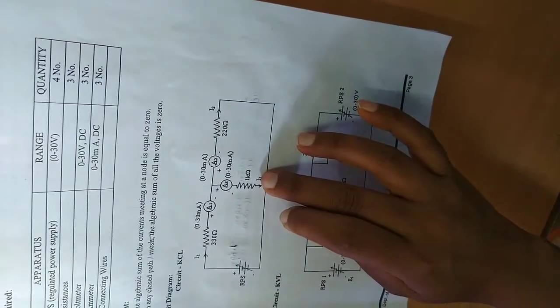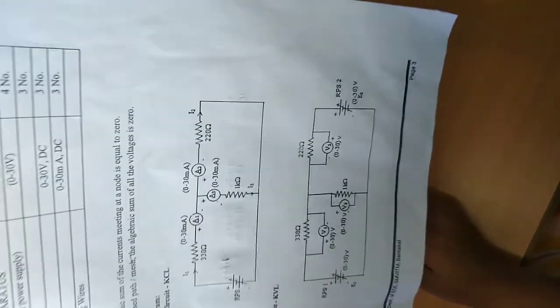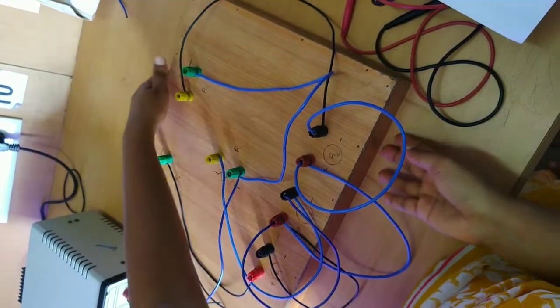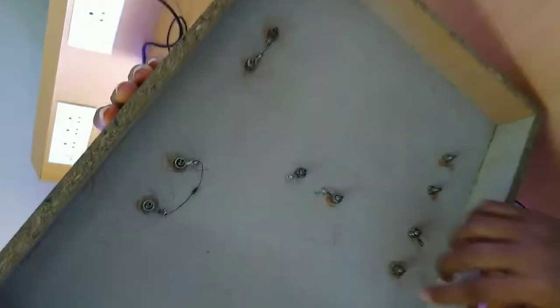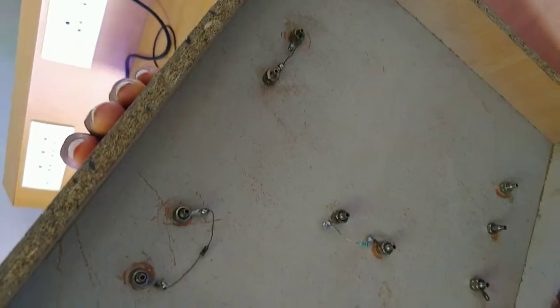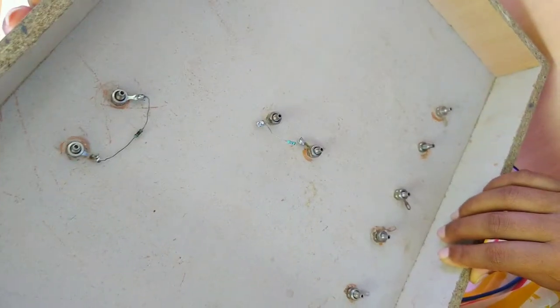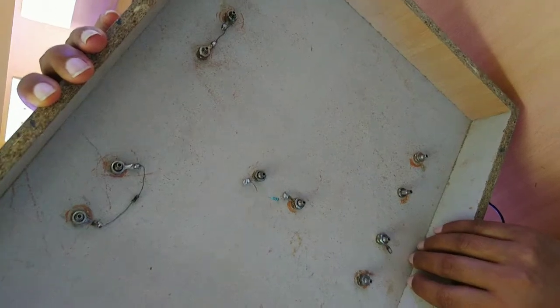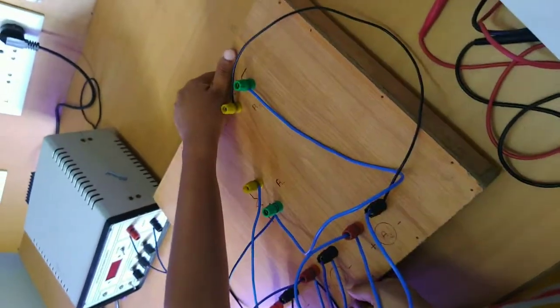a 220 ohm resistor, and a 1 kilo ohm resistor. We will rig up this circuit first. Now, for your exams you might have different resistors other than the 330 ohm, 220 ohm, and 1 kilo ohm, so you just have to check first which resistors are connected behind the board and then do the calculations accordingly.